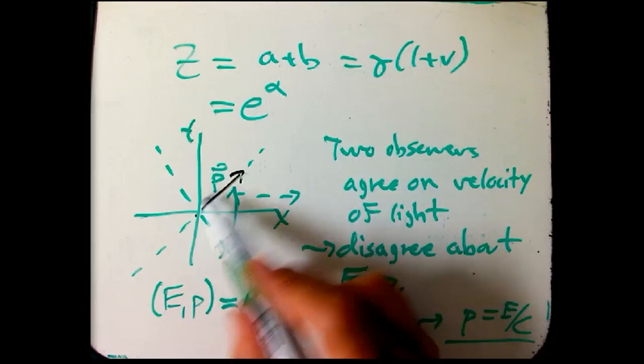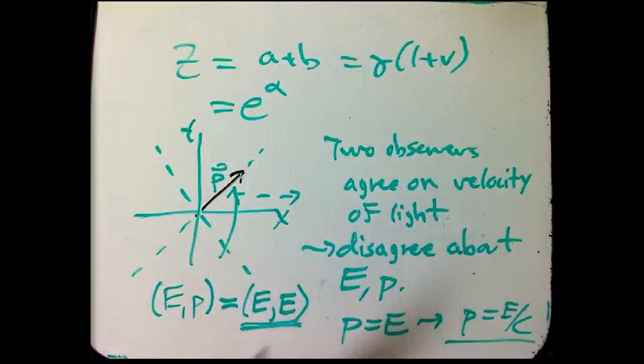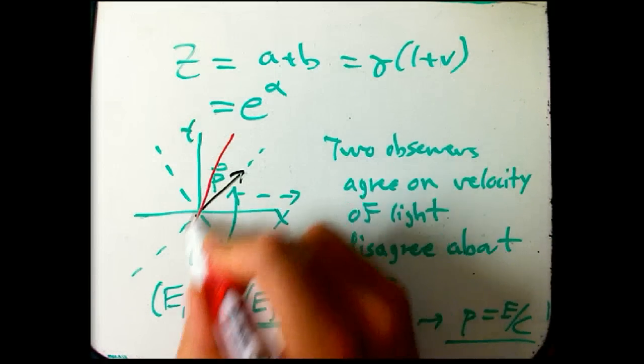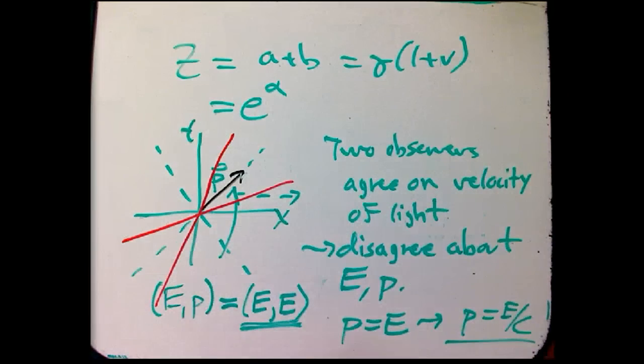so there's E comma E, that's how I would describe it in this coordinate system, has a certain energy, and then its momentum is basically equal to its energy, which is pretty cool, nice simple equation.